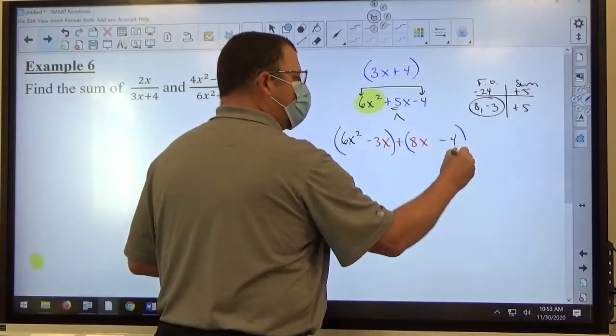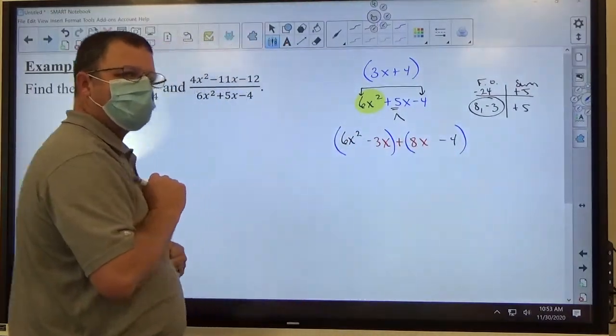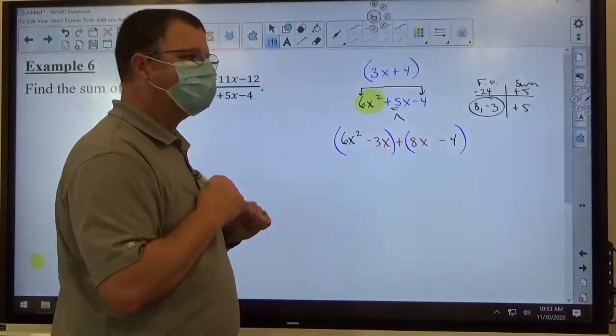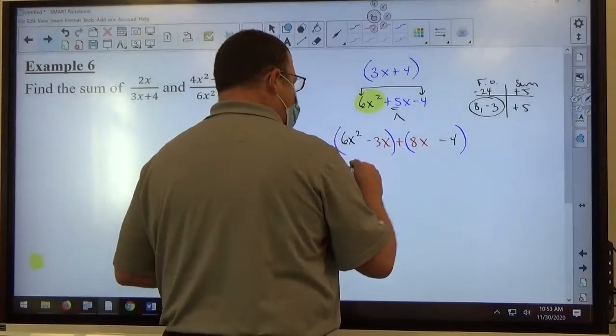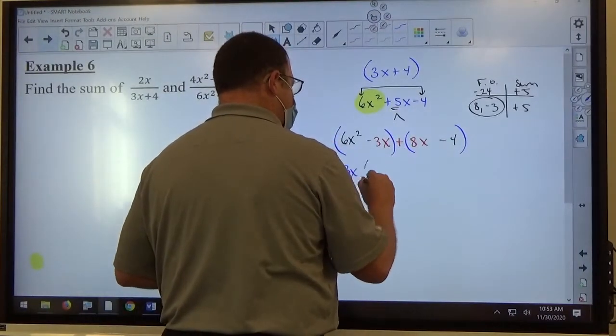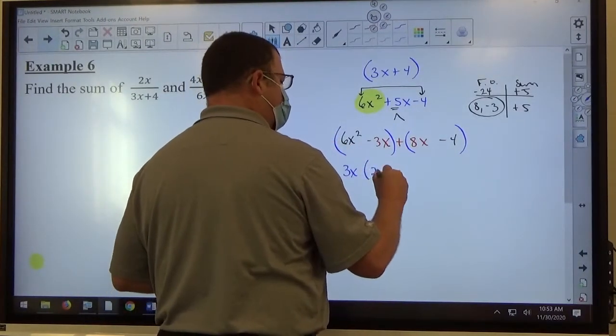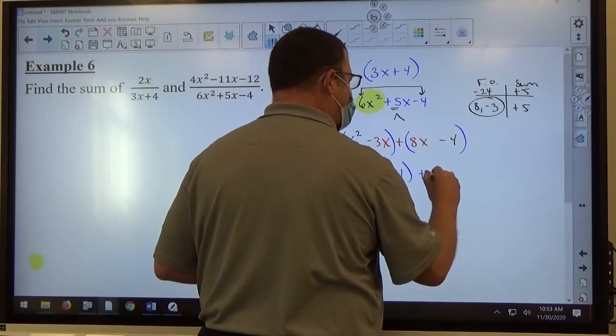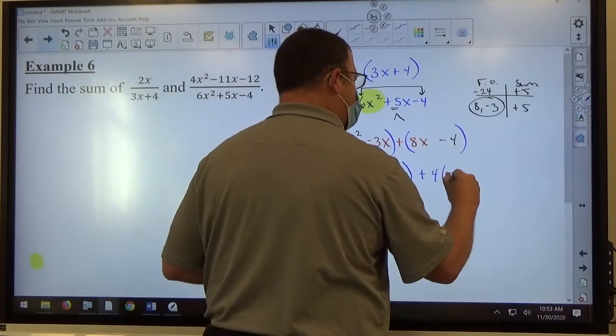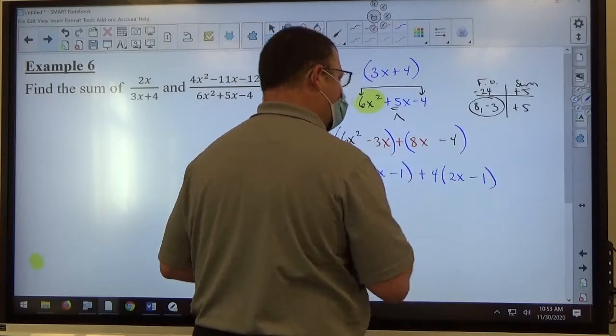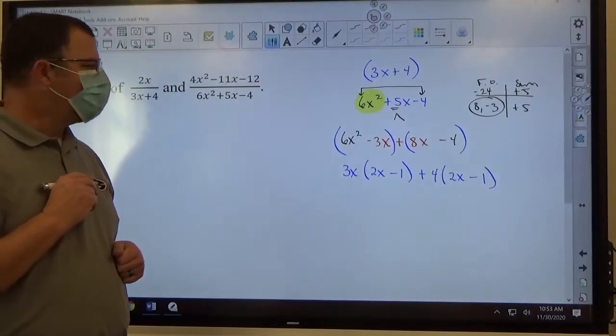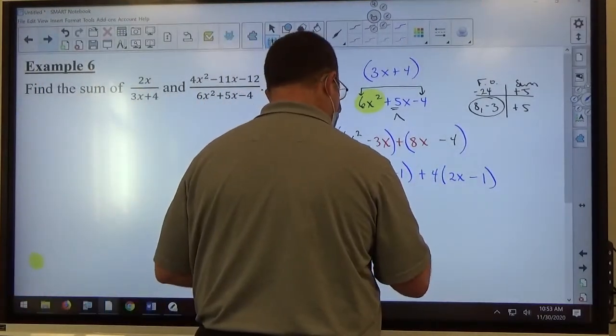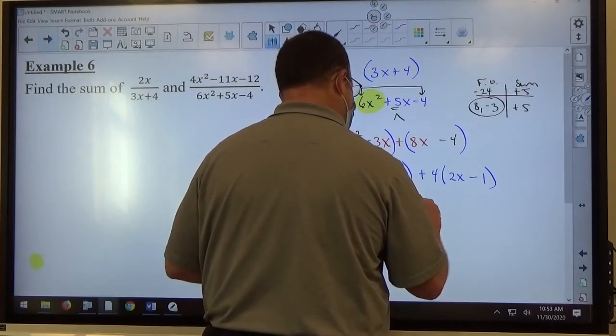First two and the second two group with the plus in the middle. Plus in the middle makes it easier. Common factor 3x in the first group. If you take 3x out of 6x², you get 2x. Take 3x out of -3x, you get -1. Second group, common factor is 4. Take a 4 out. 8x divided by 4 is 2x, 4 divided by 4 is 1. Factor by grouping works when the parentheses match, which they do. So 2x - 1 is one factor, 3x + 4 is the other factor.